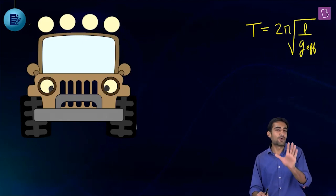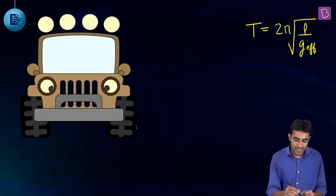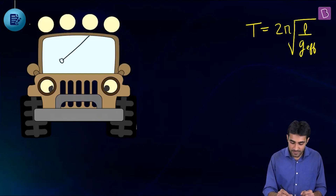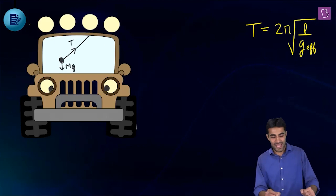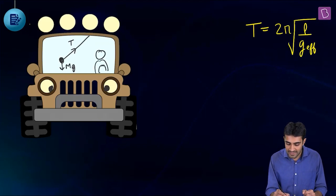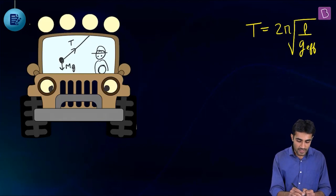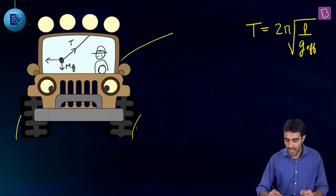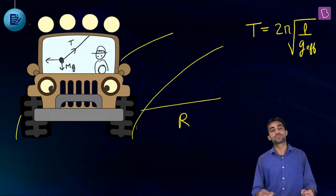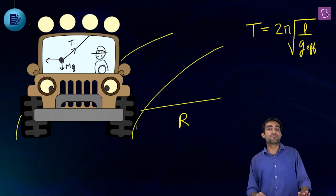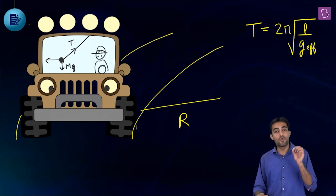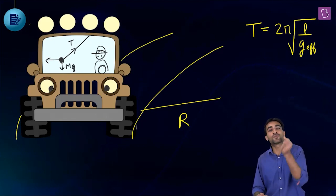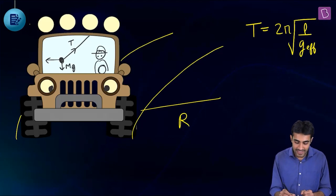Here is the simple pendulum inside the car. On the bob we have mg downward and tension T. If we observe from inside the car — a non-inertial reference frame — there is also a centrifugal force (pseudo force) radially outwards, equal to MV²/R.